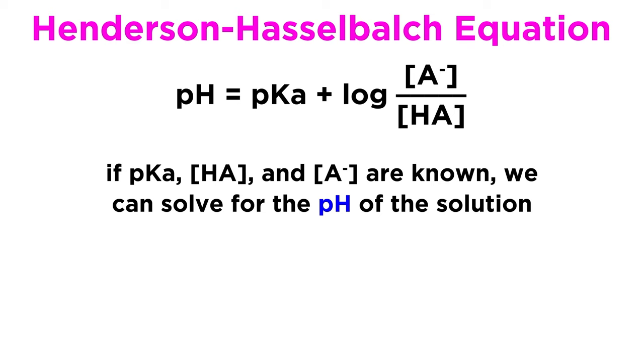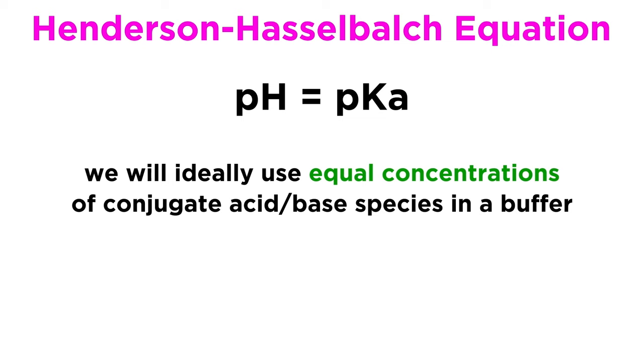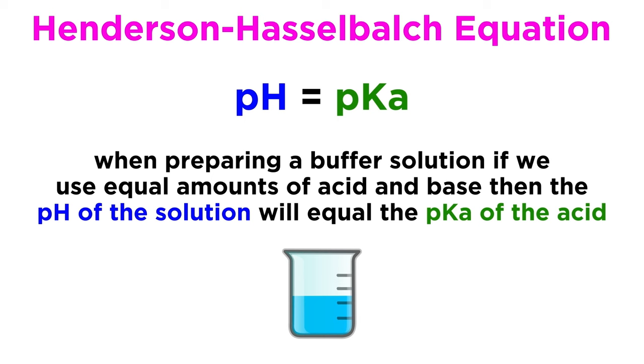But in addition to this, when preparing buffer solutions, we know that we will want to use the acid and conjugate base in equal amounts. If we do so, then this numerator and denominator will be equal, meaning this fraction will be equal to one, and the log of one is always zero, so this term disappears completely, leaving us with pH equals pKa. That means that when preparing a buffer solution, if the acid and conjugate base are used in equal concentrations, the pH of the solution will be equal to the pKa of the acid.